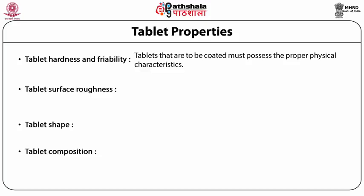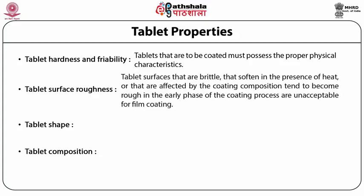The second parameter is tablet surface roughness. Tablet surfaces that are brittle, that soften in the presence of heat, or that are affected by the coating composition tend to become rough in the early phase of the coating process and are unacceptable for film coating. Film coatings adhere to all exposed surfaces so that any surface imperfection is coated but not eliminated. Sugar coatings, with their high solid content, dry more slowly and can fill many of the minor tablet surface imperfections.